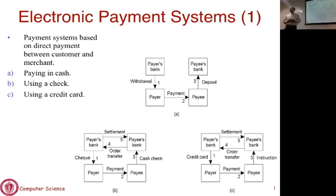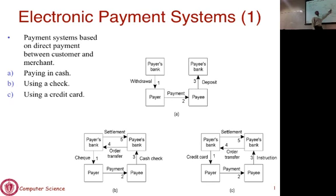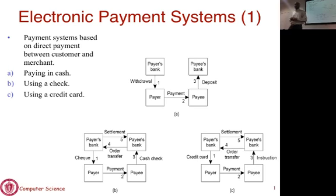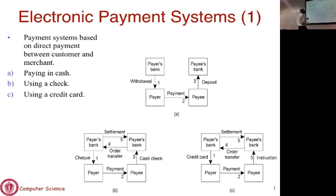This slide shows how traditional payment mechanisms work. The first figure shows cash transactions, where you may withdraw money from the bank and then pay for goods or services to any payee. The payee deposits that money at the bank. Importantly, the transaction between payer and payee just involves cash and doesn't require any exchange of personal information.